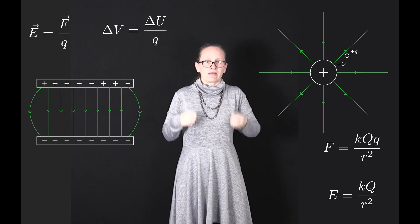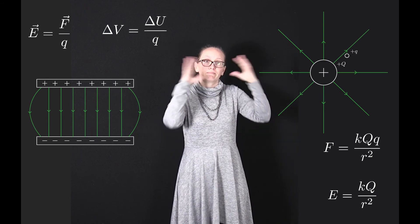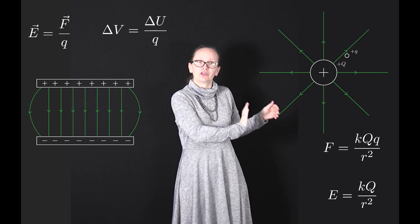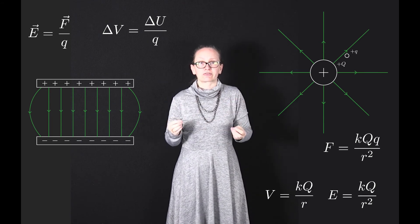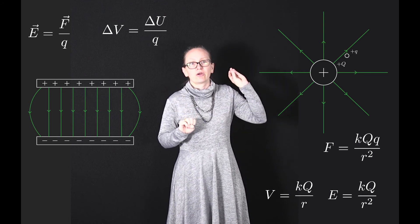It turns out that we can write an expression for the potential around a point charge such as our point charge capital Q. In this case we can describe the potential through the equation V equals kQ on r.